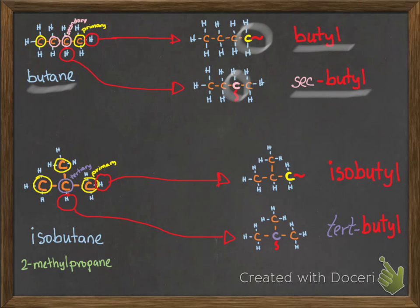We also have an isomer of butane that is isobutane. It can lose the hydrogen from a primary carbon to make isobutyl or from the tertiary carbon to make tert-butyl.